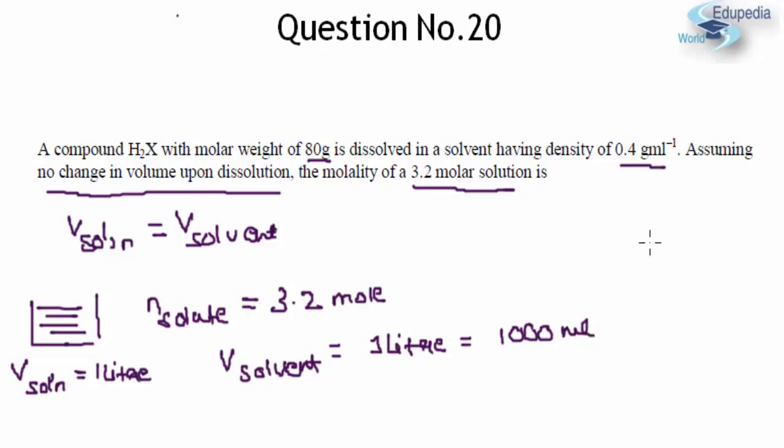Now if you look at the question, I have been given the density of the solvent and using the density and the volume I can easily calculate the mass of the solvent. That is m_solvent will be equal to, we all know the formula for that, volume into density which I am representing by ρ. So this will come out to be 1000 × 0.4 so that will make it as 400 grams or 0.4 kg.